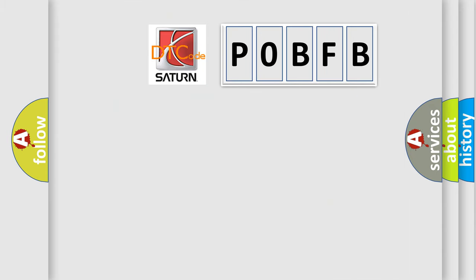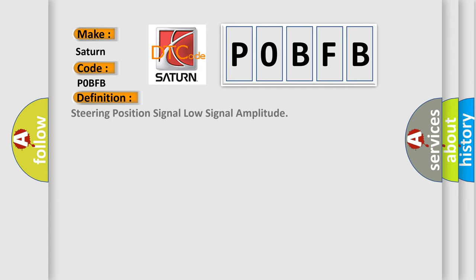So, what does the diagnostic trouble code POBFB interpret specifically for Saturn car manufacturers? The basic definition is: Steering position signal low signal amplitude. And now this is a short description of this DTC code: Vehicle speed is greater than 15 km per hour.